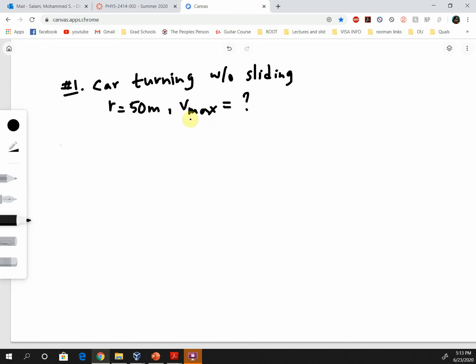That is what our goal is. A top view of the car will look like this - the car is making a turn, traversing a circular arc with a radius r equals 50 meters. Since it is moving in a circle, we know that there must be a centripetal acceleration directed towards the center.